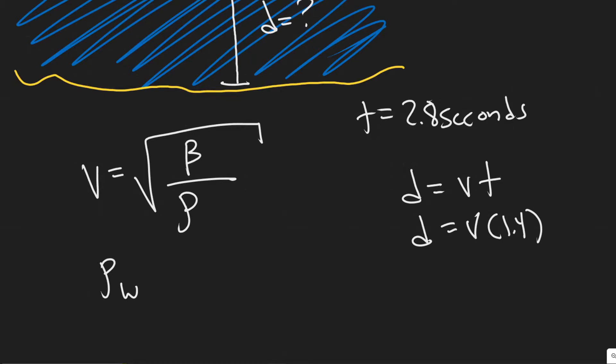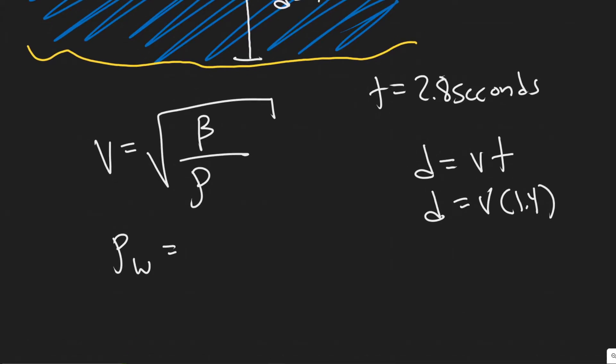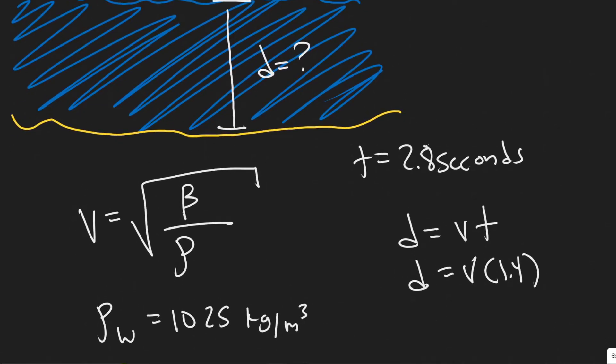We know the density of water. The density of water is equal to about 1025 kilograms per meter cubed. So that is the density of the fluid.